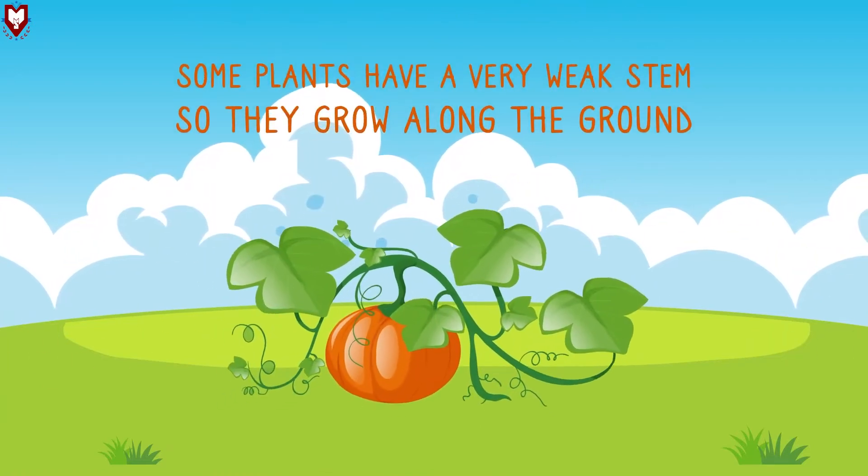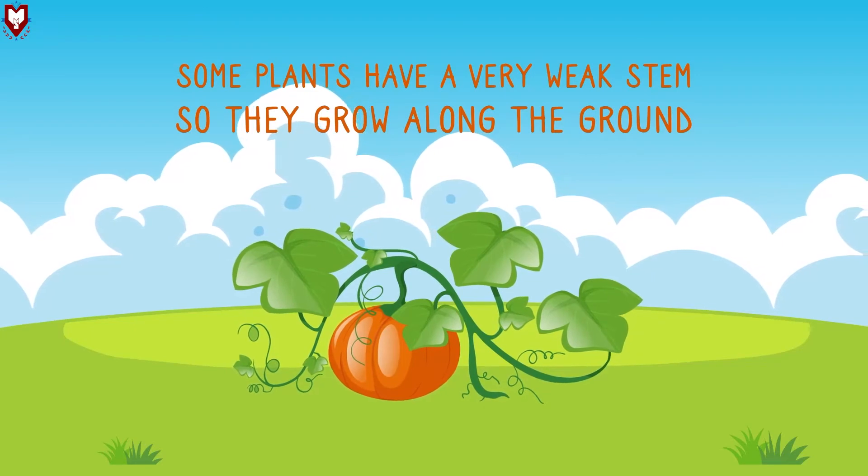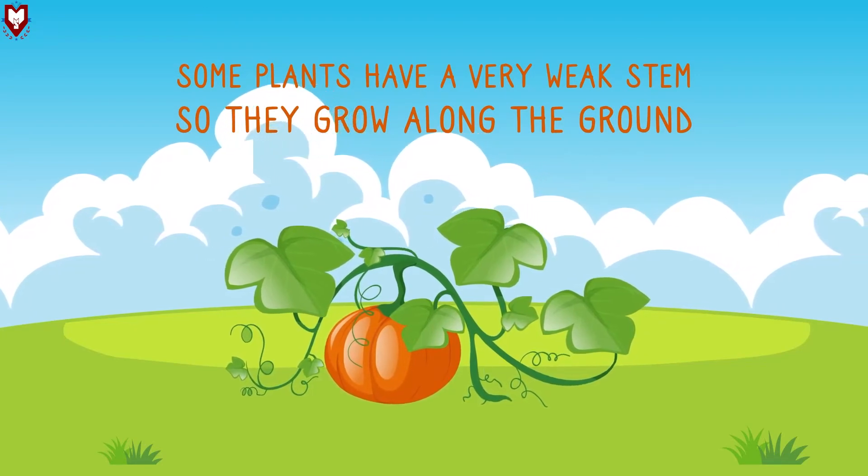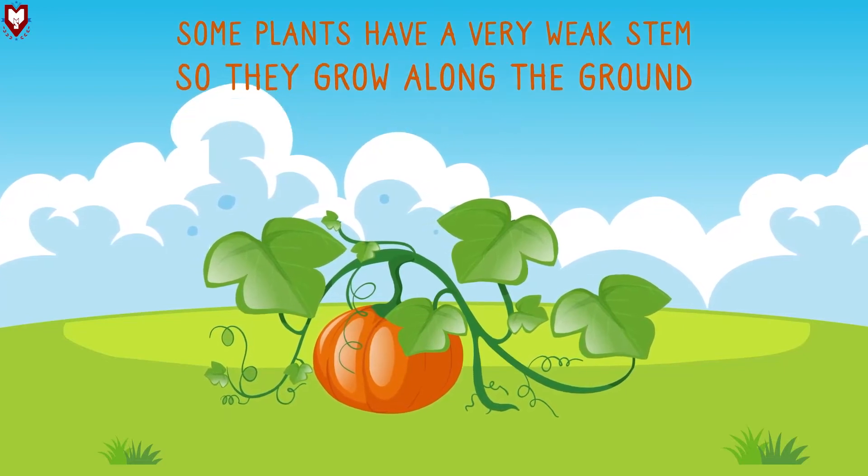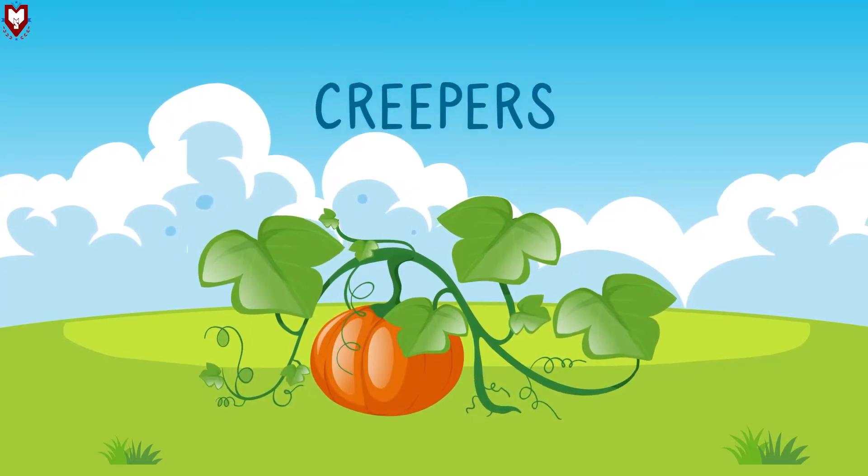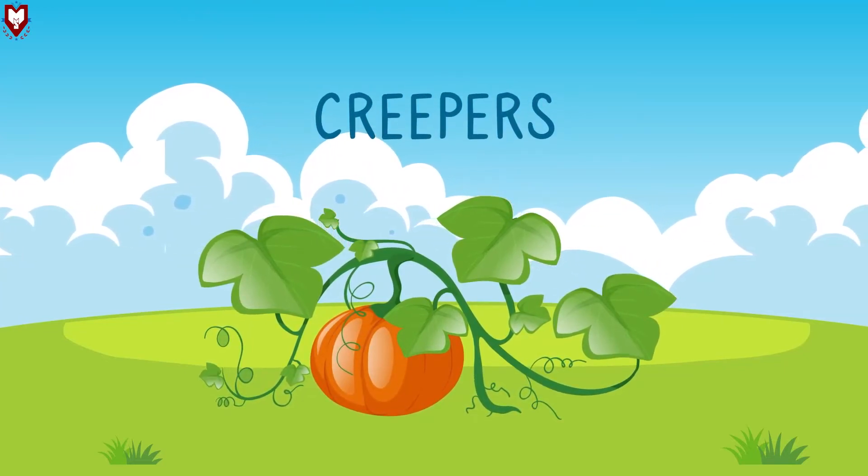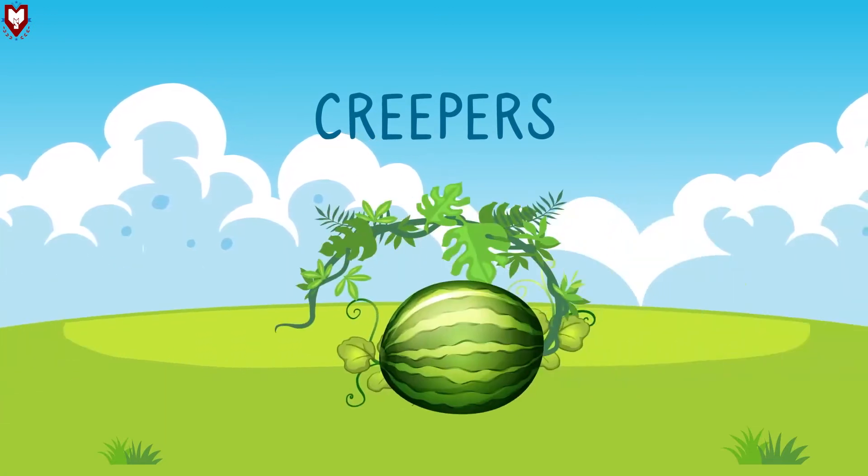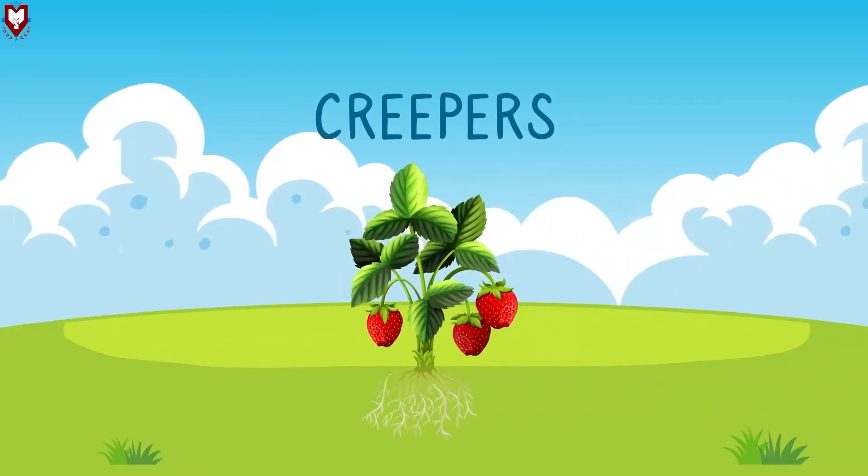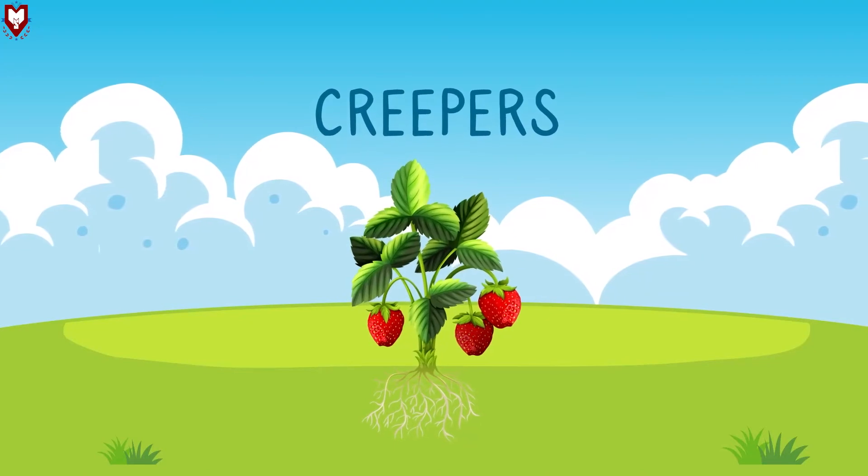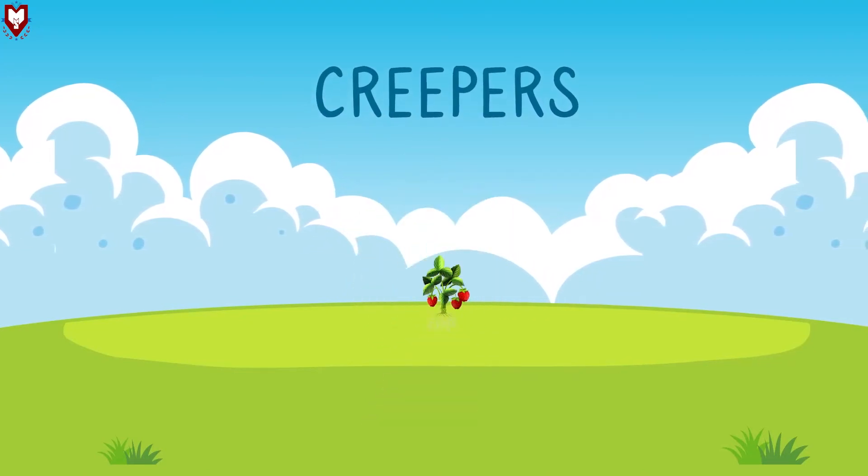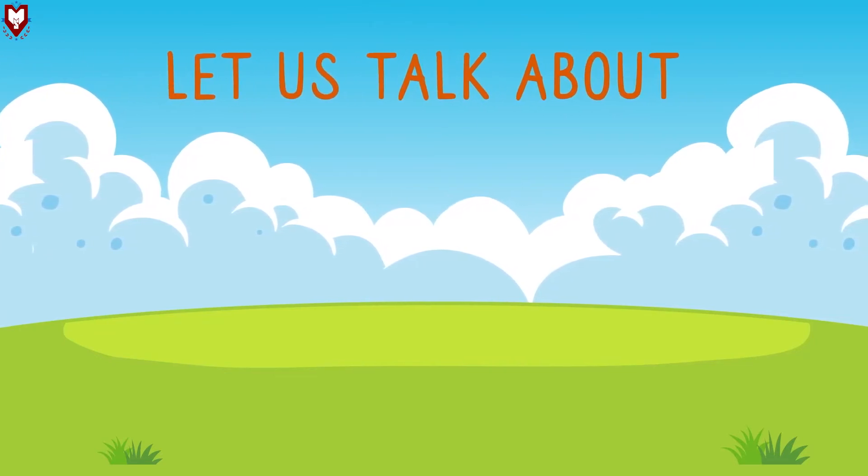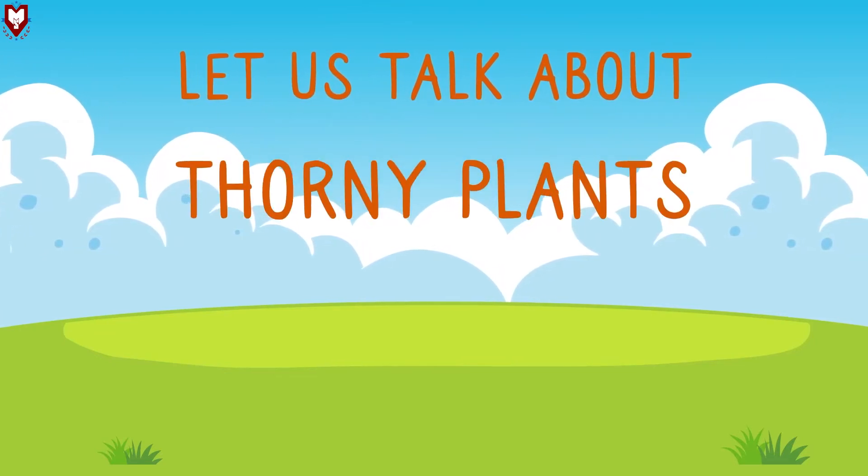Some plants have a very weak stem. So they grow along the ground. They are called creepers. Pumpkin, watermelon, strawberry are some examples of creepers. Now let us talk about thorny plants.